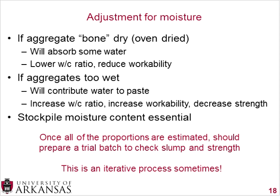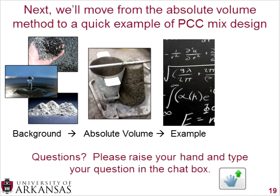Once you've estimated all of your proportions, you make a trial batch and check your slump and strength. If you don't hit what you're looking for, this is an iterative process — you'll need to reevaluate what was working and what wasn't and go from there.